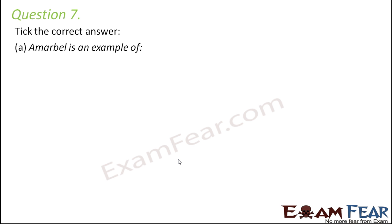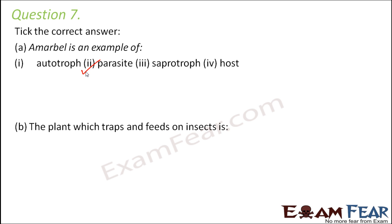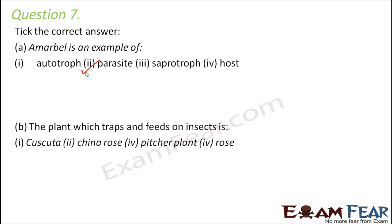Question number 7. Choose the correct answer. Amarbel is an example of: autotroph, parasite, saprotroph, or host. Amarbel is basically a parasite — it lives on other plants and derives nutrition from them. The plant which traps and feeds on insects is: Cuscuta, China rose, pitcher plant, or rose. It is of course the pitcher plant, because it has leaves modified into pitcher-like structures, and as soon as insects come near it, they are trapped inside.